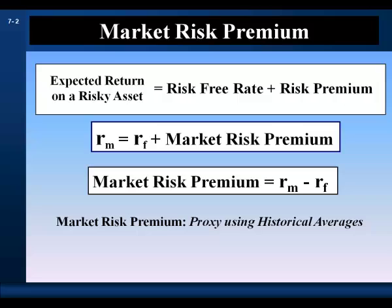In practice, we use averages taken from historical data, and the average historical market risk premium is used as a proxy for the expected future market risk premium. Keep in mind that when you're using the past to predict the future, you're assuming the future is going to be exactly like the past — that the past period over which we are calculating our averages is representative of the future.